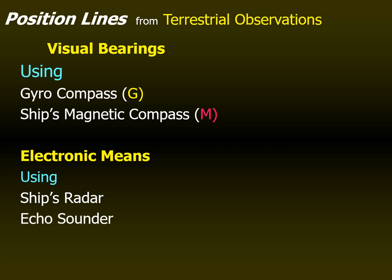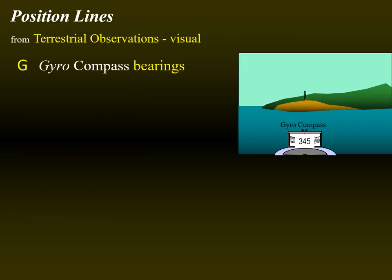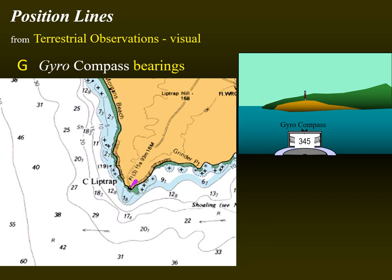Electronic means of position fixing involves use of the ship's radar and the echo sounder, as I'll show you in subsequent slides. For visual bearings using the gyro compass, for example, the bearing of the lighthouse is obtained using the gyro compass. Since the gyro error is assumed to be zero in this case, the gyro north will coincide with the true north, and thus the bearing obtained of the lighthouse becomes the true bearing.